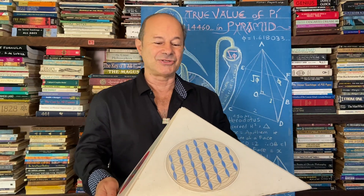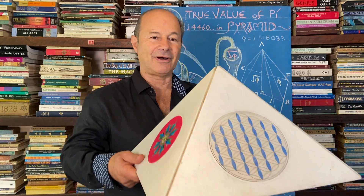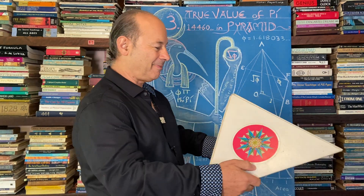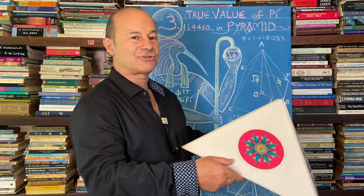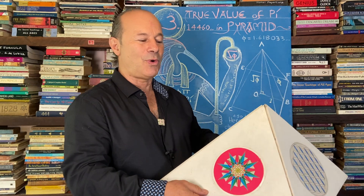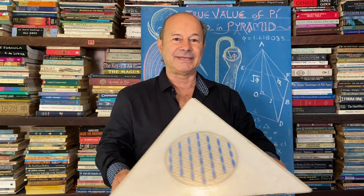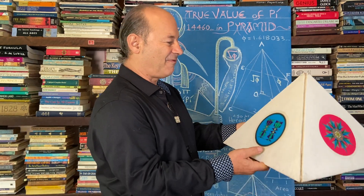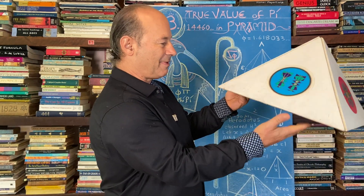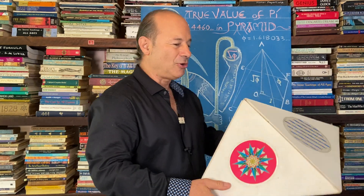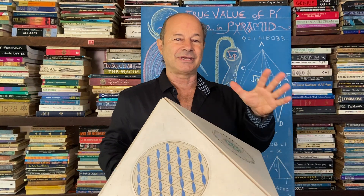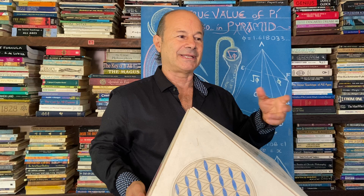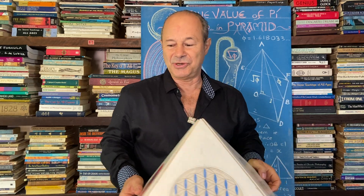I would like to share with you some ancient knowledge regarding the builders of the pyramids. The ancient pyramid is the only known structure in the world that contains both Phi and Pi. I'm going to show you how this four-sided pyramid with a square base encoded and encapsulated all the ancient harmonics that the masters of the universe knew about.